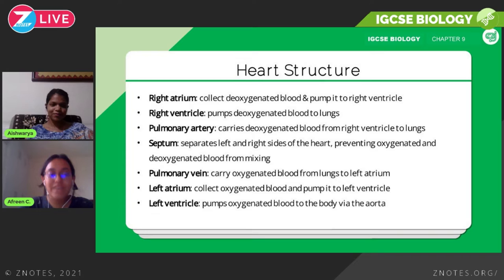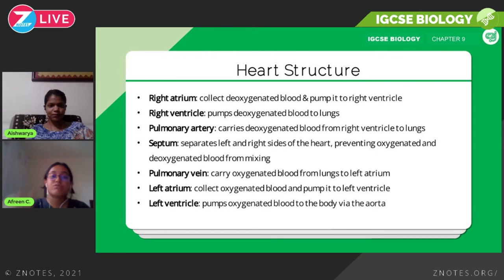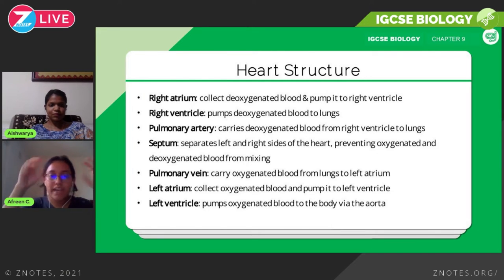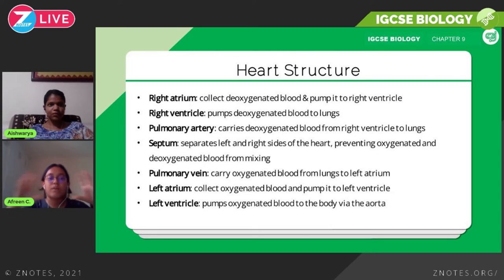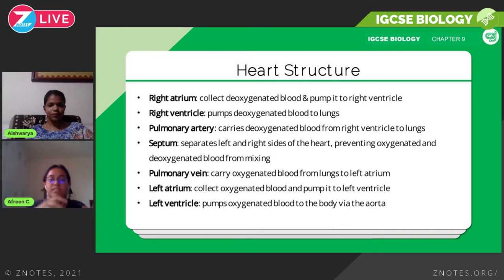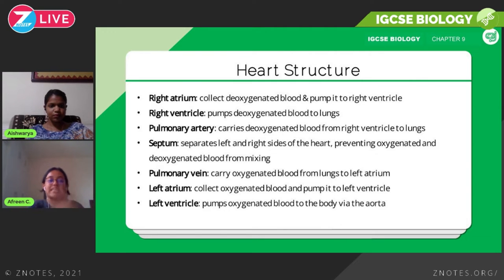The right atrium collects deoxygenated blood from the body. As blood travels through the body it loses its oxygen to cells, becoming deoxygenated — with a much higher concentration of carbon dioxide. This deoxygenated blood is pumped into the right atrium, which then pumps it to the right ventricle. The right ventricle pumps this deoxygenated blood to the lungs, where it becomes oxygenated — dropping off carbon dioxide and collecting oxygen.